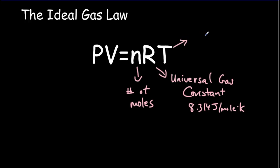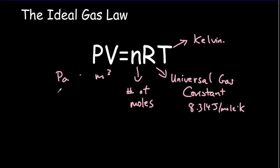T, the temperature, just remember, it's got to be in Kelvin. And for our pressure and volume, we can either put our pressure in pascals and our volume in meters cubed, or we can use kilopascals and liters. Either one of those combinations will use this value for the universal gas constant.